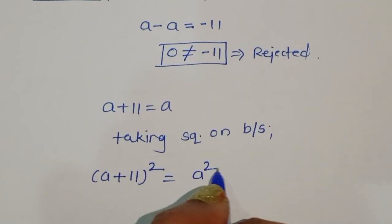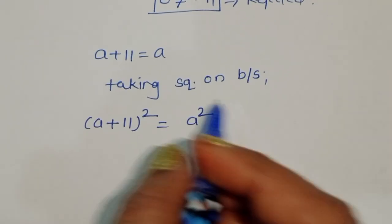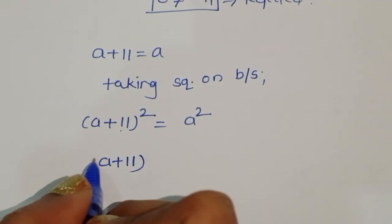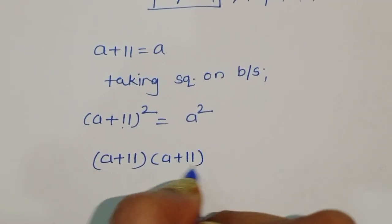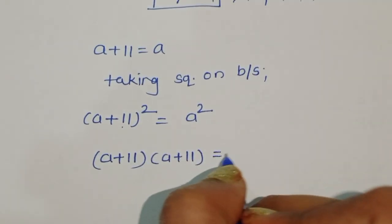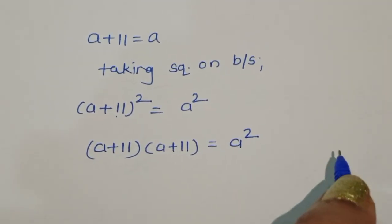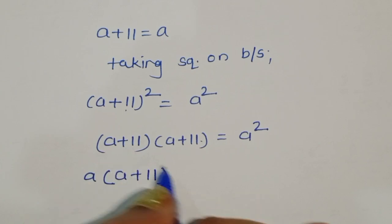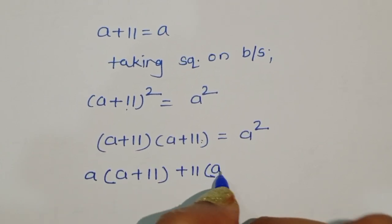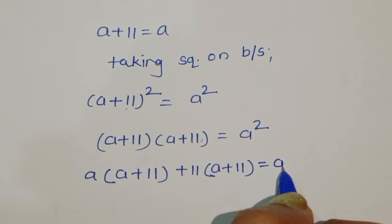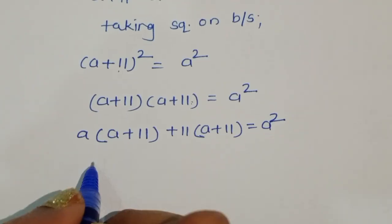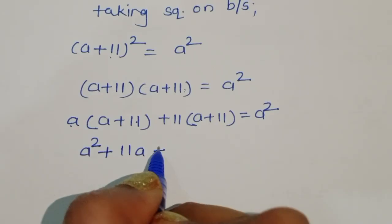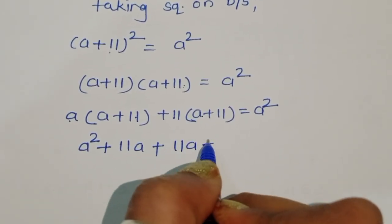Now we have to apply (a+11)². We can write this as (a+11)(a+11) = a². Multiplying: a times (a+11) plus 11 times (a+11) gives a² + 11a + 11a + 121 = a².